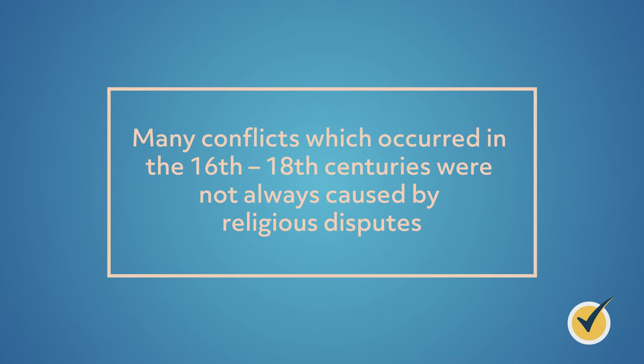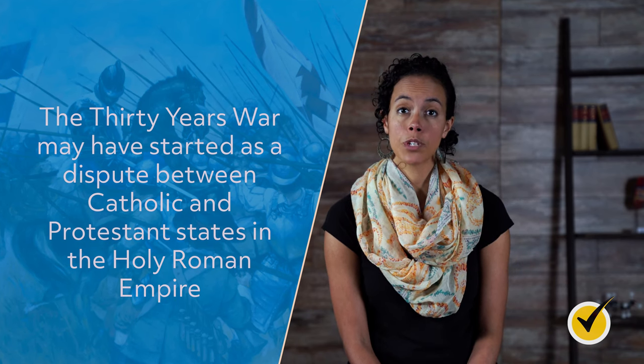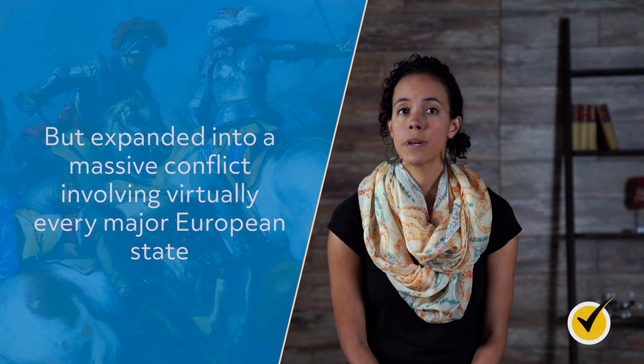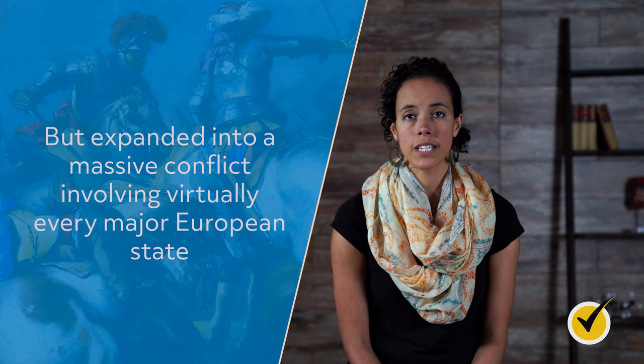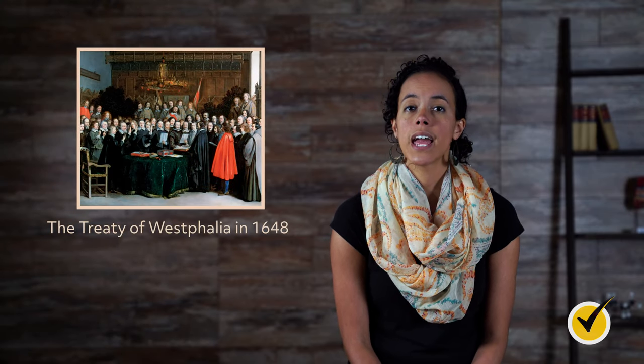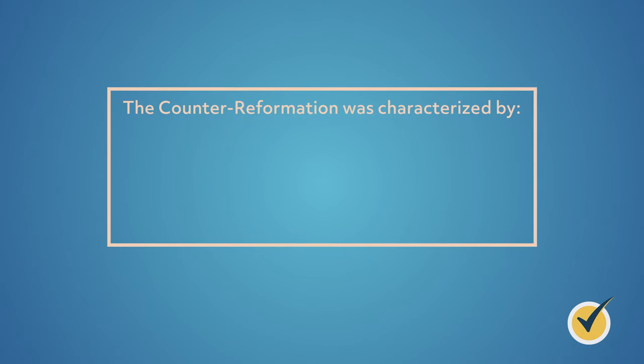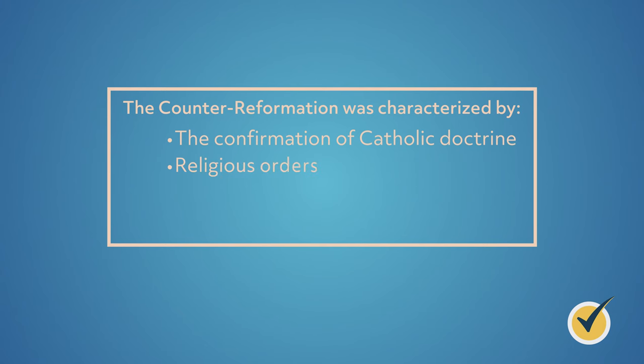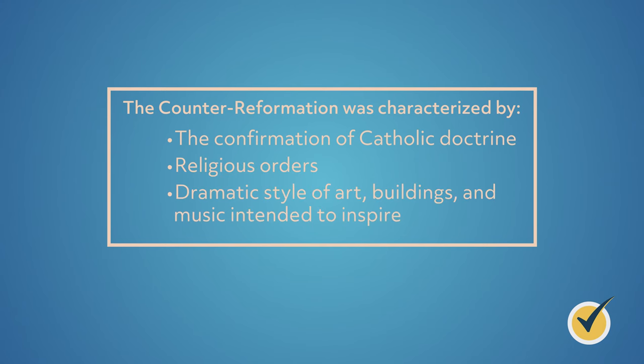The final aspect of the Counter-Reformation that we're going to look at is war. Though sometimes known as the Wars of the Reformation, the many conflicts which occurred in the 16th to 18th centuries were not always caused by religious disputes. The Thirty Years' War may have started as a dispute between Catholic and Protestant states in the Holy Roman Empire, but expanded into a massive conflict involving virtually every major European state. The Treaty of Westphalia in 1648 brought an end to the war and is generally viewed to be the end of the Counter-Reformation period. In summary, the Counter-Reformation was a vigorous response by the Catholic Church to the challenges made by the Reformation movement that began in the 1500s and ended with the Treaty of Westphalia in 1648. The Counter-Reformation was characterized by the confirmation of Catholic doctrine, religious orders, and a dramatic style of art, buildings, and music intended to inspire.